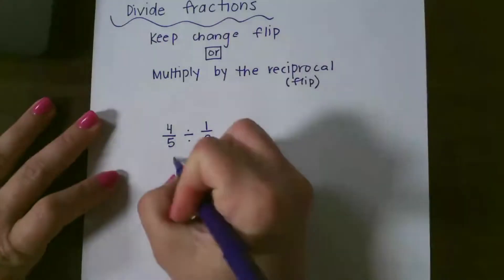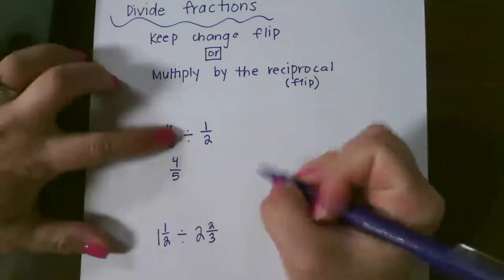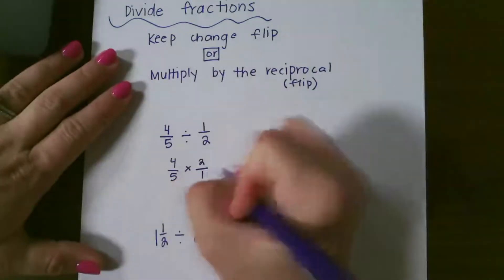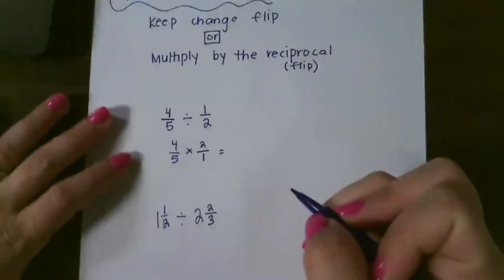So again, we don't do anything to our first fraction, and we're going to multiply by the reciprocal, which just means to flip the second fraction. And then you just multiply straight across.